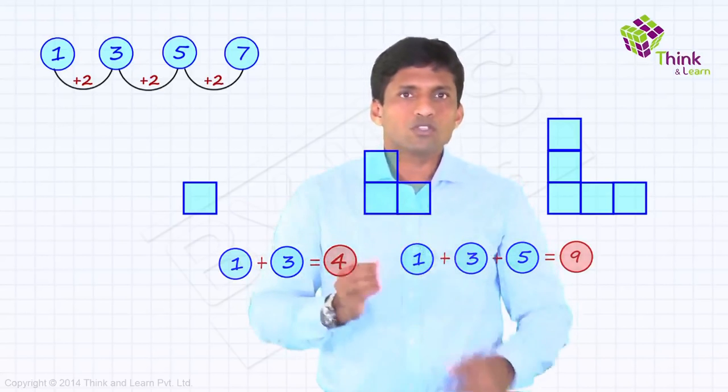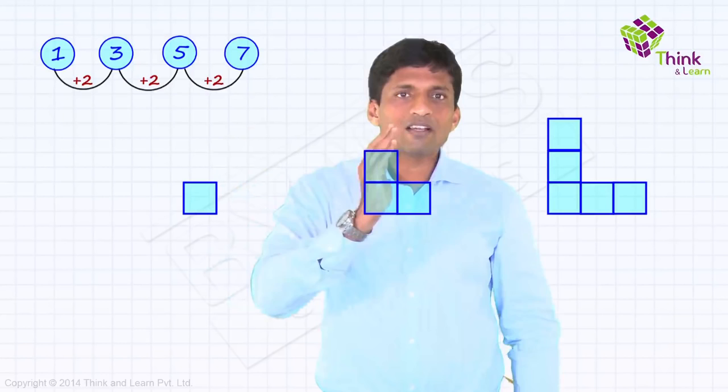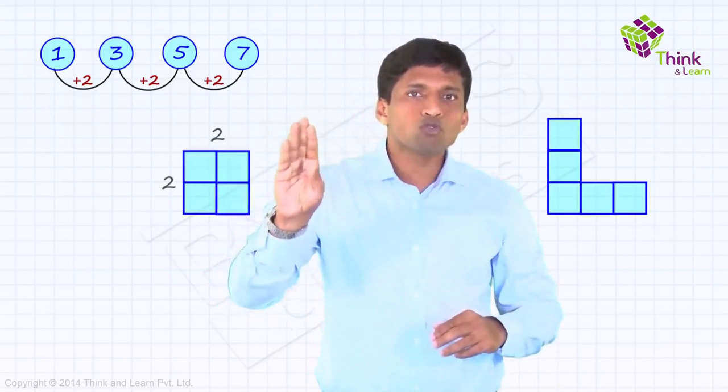And it's very simple and interesting. So, we have first take 1 and then take 3. Just rotate and keep it on top. So, we will get a 2 by 2 square here.